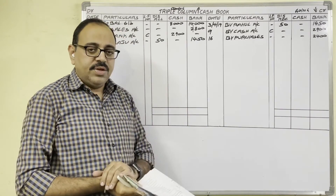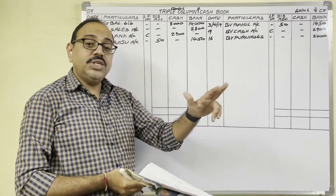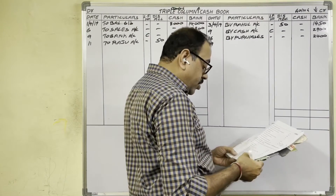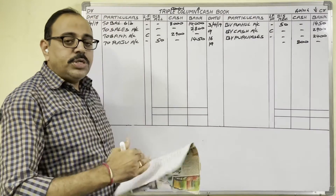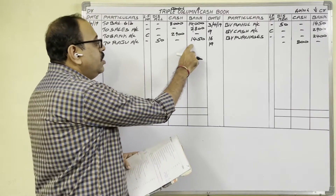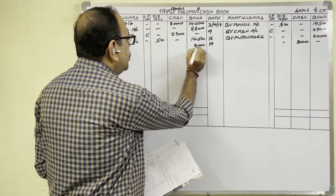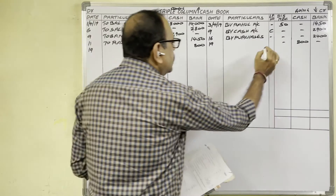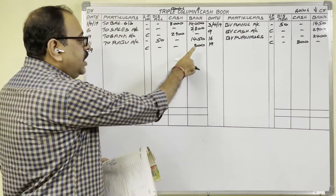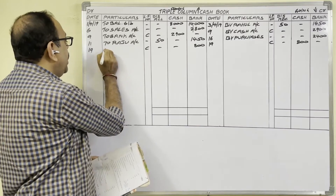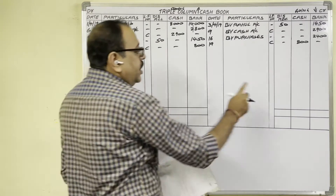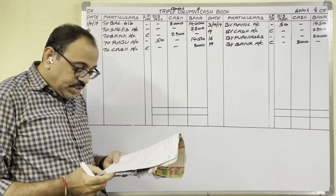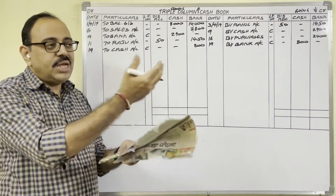19th April: Paid cash into bank — 800 rupees. Here 'paid' means deposited. The firm deposited cash into the bank — this is a contra entry. Cash is going out of the firm, so on the credit side cash column we write 800 rupees. Bank balance is increasing, so on the debit side bank column we write 800 rupees. Write 'C' in the LF column to indicate the contra entry. In the bank column particulars we write 'To Cash Account'; in the cash column we write 'By Bank Account'.